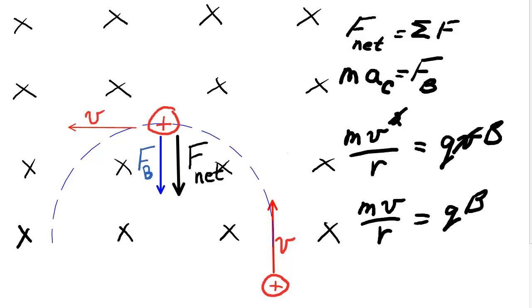I can rearrange this equation and solve for R. And if I do this, I simply get R is MV divided by QB.